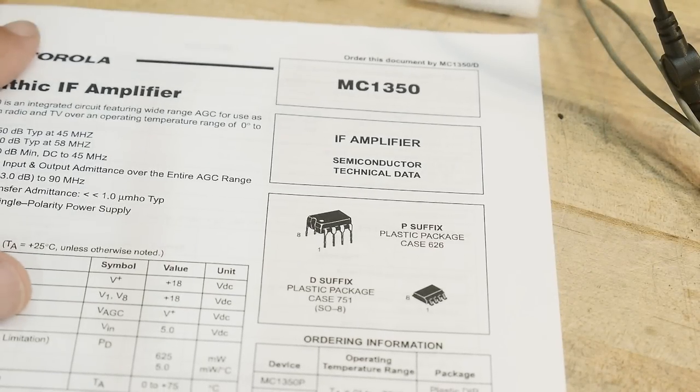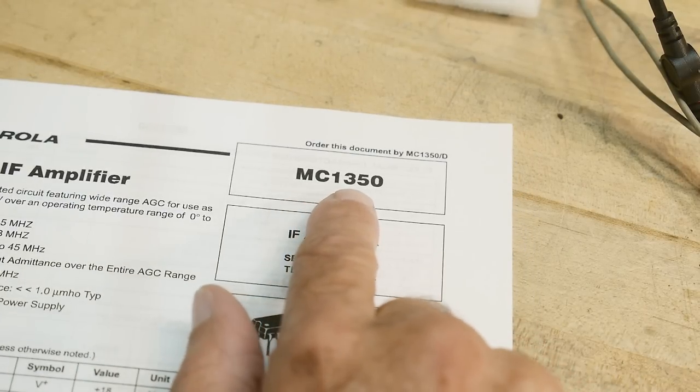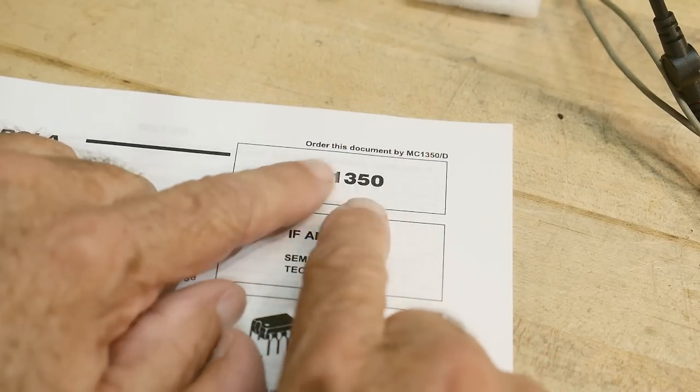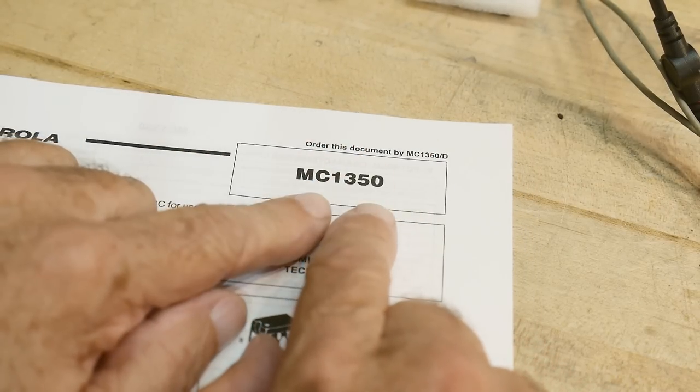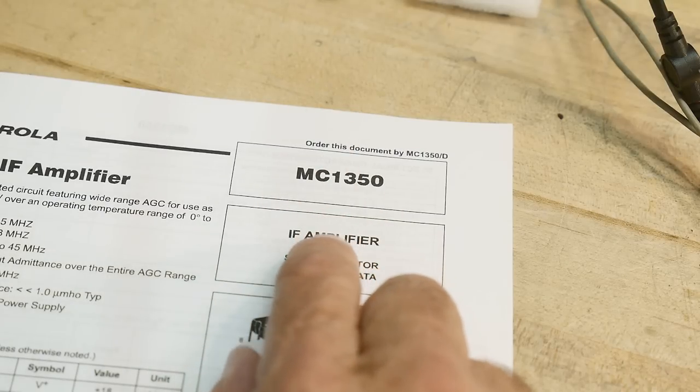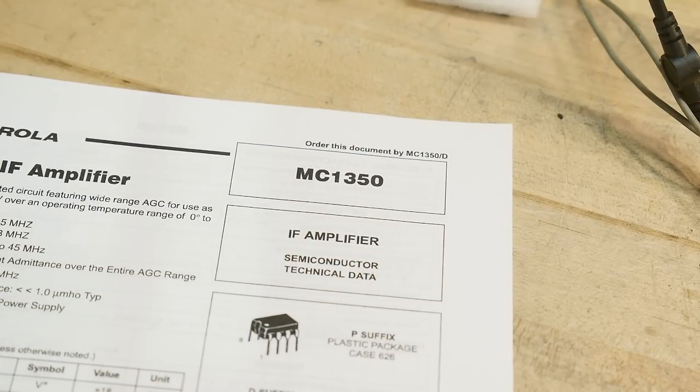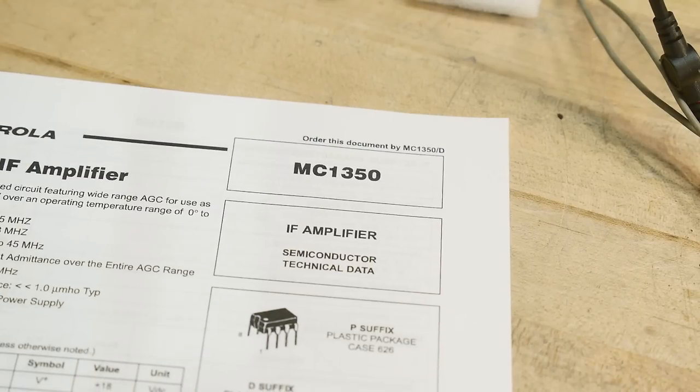Alright, chip of the day. People love chip of the day. This is an MC1350, a popular chip for televisions and also used in a lot of radios. It goes up to about 45 megahertz, so great for HF equipment and things like that.